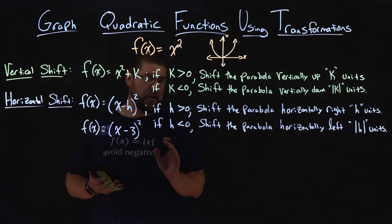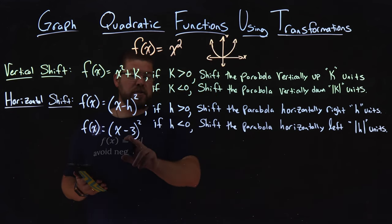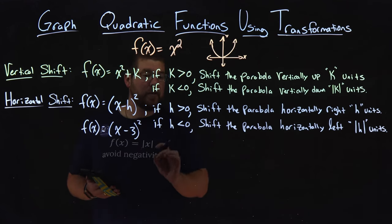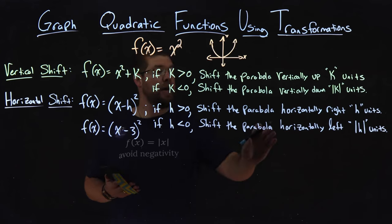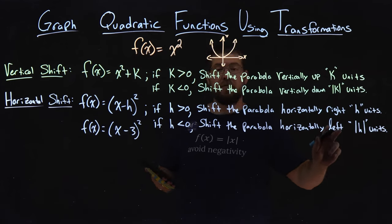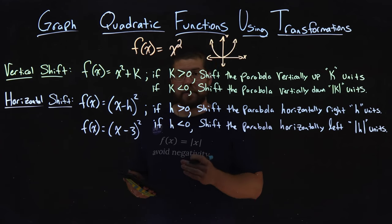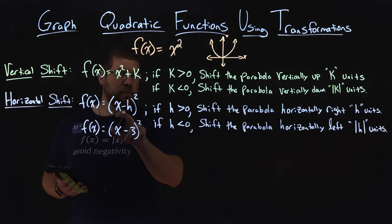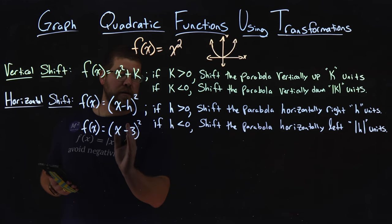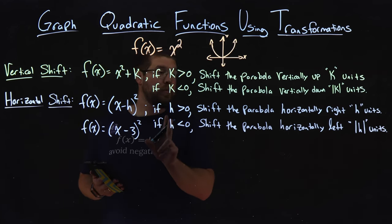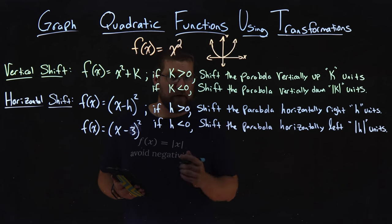What is our h value? A common mistake is students will see that this is a minus three and think the h value is a negative three and say, we shift the parabola to the left three units. But that would be incorrect. Notice our base form of the function here is x minus whatever h value is. Our h value doesn't include the subtraction sign, so our h value is actually a positive three, and this will shift the parabola to the right three units.